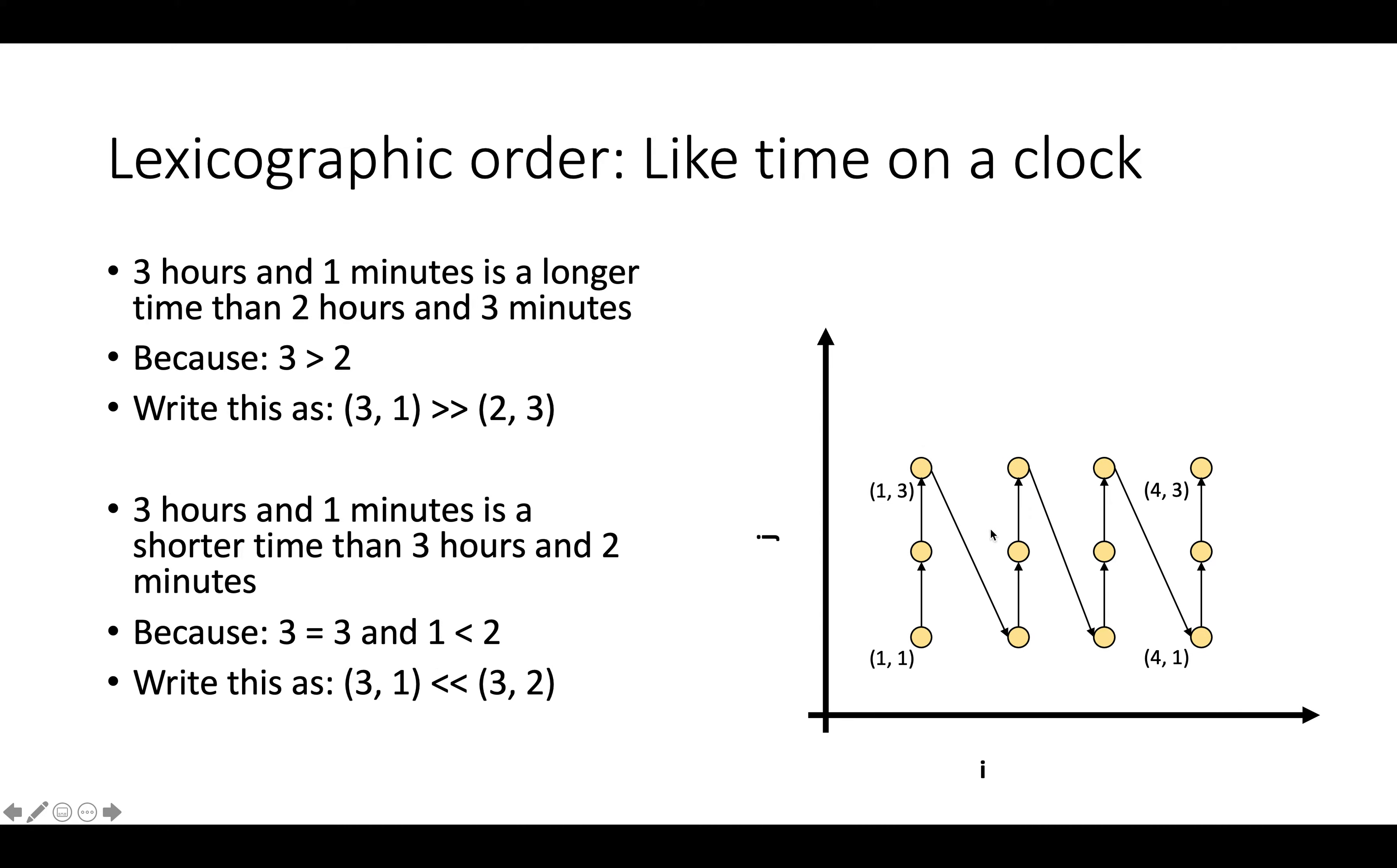And if you were to flesh out this order, and for each of these points draw an arrow to the lexicographically next point in the iteration domain of this set of loops, then what you would see is this drawing, which is exactly the execution trace we'd expect. You know, i equals 1, j equals 1, i equals 1, j equals 2, i equals 1, j equals 3, then we get out of the inner loop nest, we go to the next iteration of the outer loop nest, and we get to i equals 2, j equals 1, then i equals 2, j equals 2, then i equals 2, j equals 3.